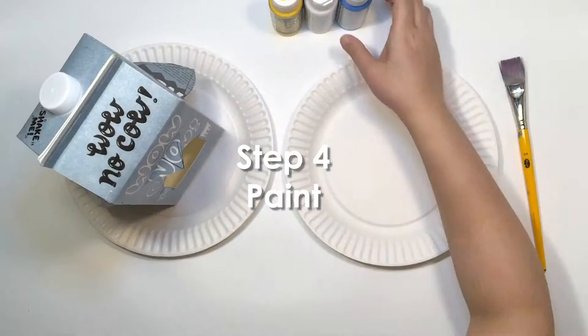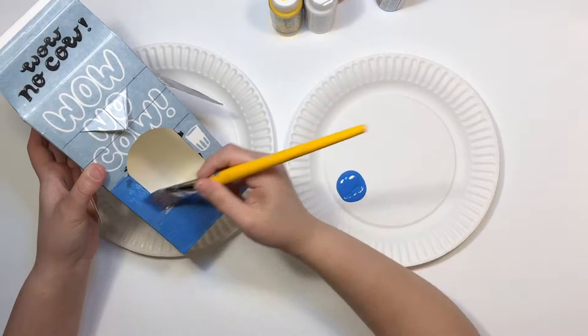Step four: paint. Next, paint your carton whatever color you want. I'm using a bright blue along with yellow for the beak.